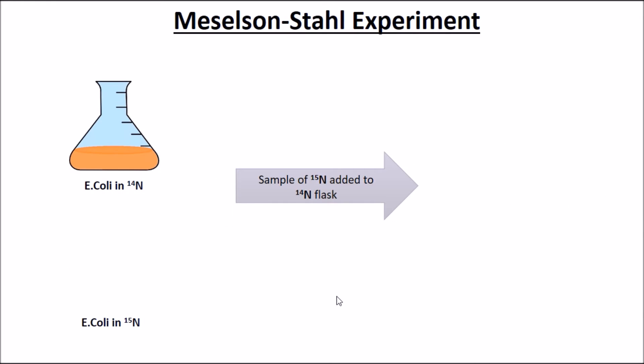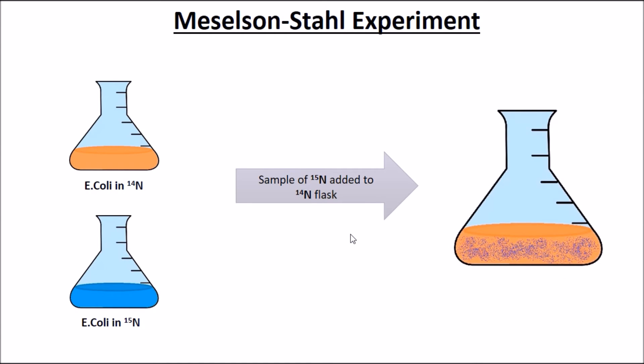So, a sample of E.coli with N15 was added to the N14 flask and the first sample, generation 0, was centrifuged. Samples were then taken every 20 minutes and the following results were obtained.